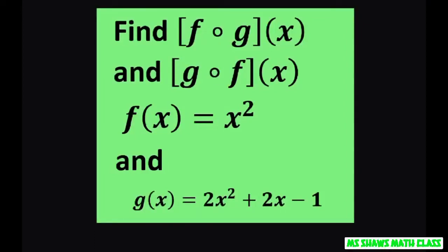Hey everyone, we're going to find f of g of x and g of f of x. Given our two functions are f of x equals x squared and g of x equals 2x squared plus 2x minus 1.